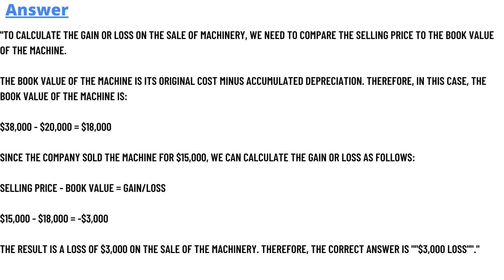Since the company sold the machine for 50,000, we can calculate the gain or loss as follows: selling price minus book value equals gain or loss. 50,000 minus 80,000 equals 3,000. The result is a loss of 3,000 on the sale of machinery. Therefore, the correct answer is a 3,000 loss.